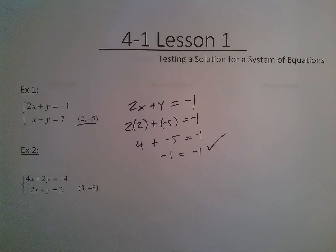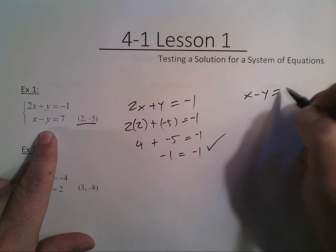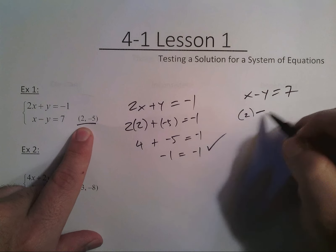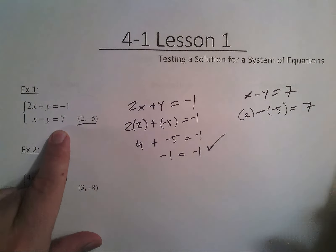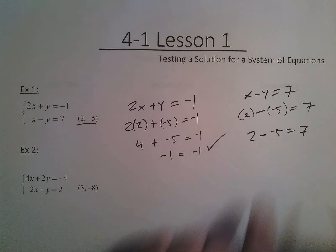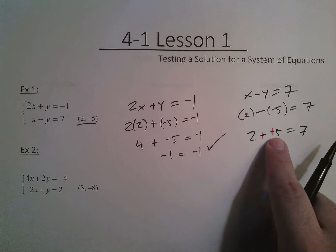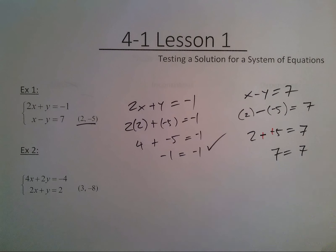2 comma negative 5 is a solution to the system of equations 2x plus y equals negative 1. But we also have to see if it works in the second equation. So my second equation is x minus y equals 7. We're going to replace x with 2. We're going to subtract from it, replacing y with negative 5. And we're going to see if it equals 7. So we get 2 minus negative 5 equals 7. Now, any time I have a minus minus, I like to just make them both pluses. I'm taking away a debt. I'm taking away a negative. So 2 plus 5 is 7. And yes, it works.